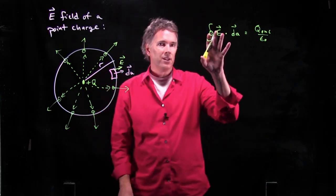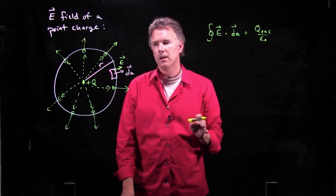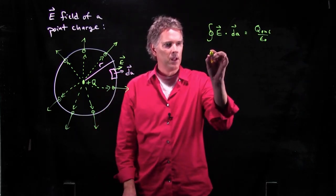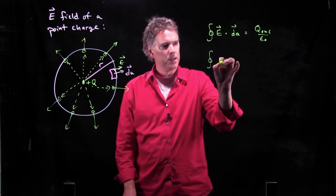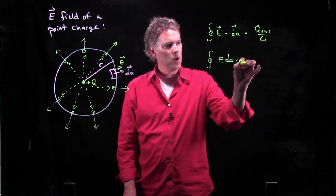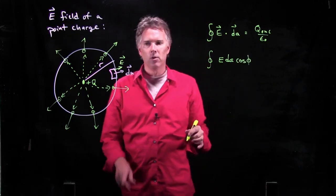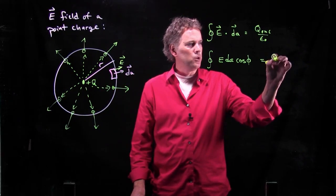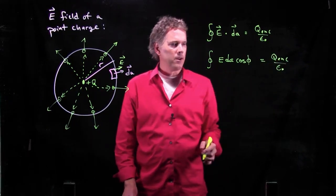Okay, so what does this equation now become? Well, it becomes quite simply this. Integral of E dot dA becomes E times dA times cosine of the angle between them. All of that is equal to q enclosed over epsilon not.